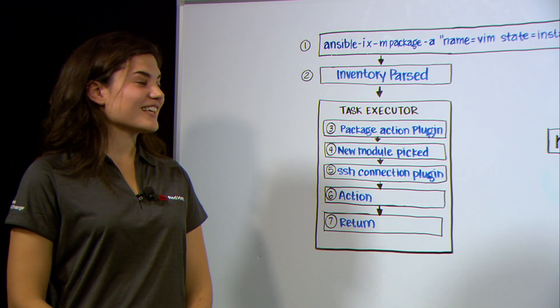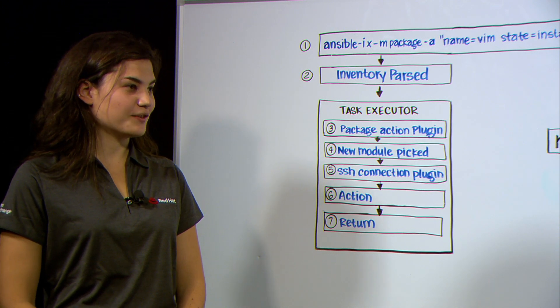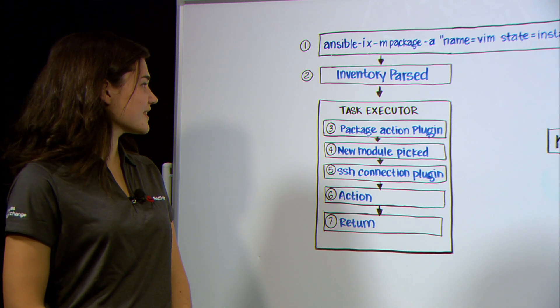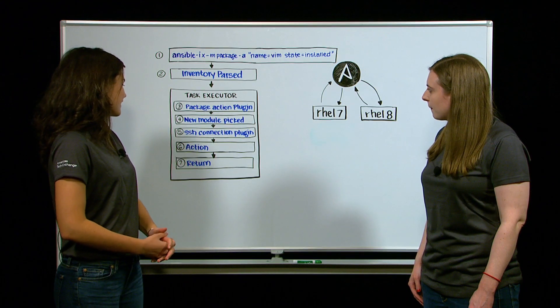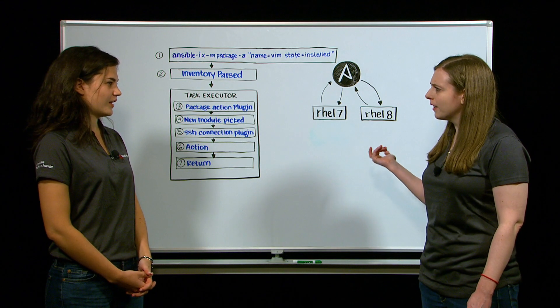So the first thing that Ansible is going to do is it's going to parse the inventory. As part of this, each of the hosts in the inventory are going to select a particular connection plug-in. So for this case that we're running through today, it's going to select the SSH connection plug-in. Why does each host pick a connection plug-in?